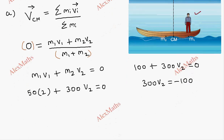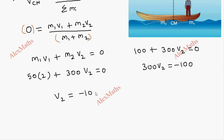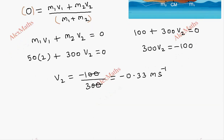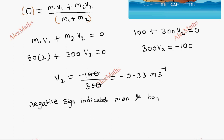Simplifying: 300*v2 = −100, so v2 = −100/300 = −1/3 ≈ −0.333 meters per second. The negative sign indicates the man and boat are moving in opposite directions. This is the first part.